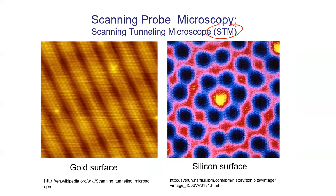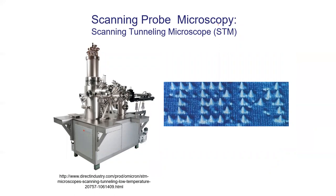There are different types of scanning probe microscopy — they all have acronyms. Scanning tunneling microscopy is the one for looking at metal surfaces. We can see the gold surface on the left and the silicon surface on the right and make out individual atoms — really incredible. IBM has been a big researcher in this type of microscopy, and they discovered you can actually manipulate individual atoms — pick an atom up and place it. That's actually what they did: they made their corporate logo with individual atoms, spelling out 'IBM.' Pretty cool stuff if you're into advanced physics.